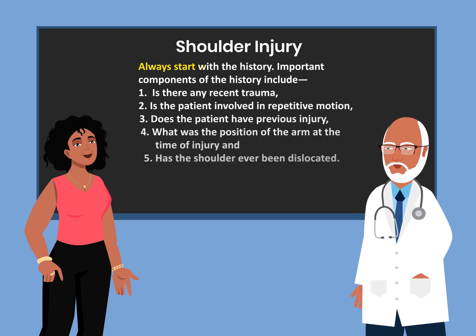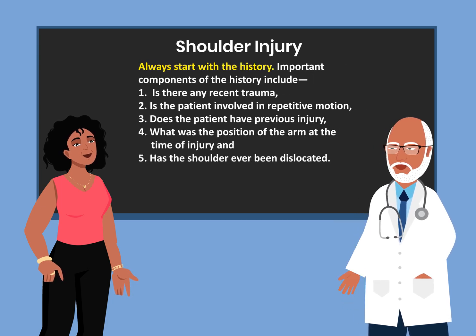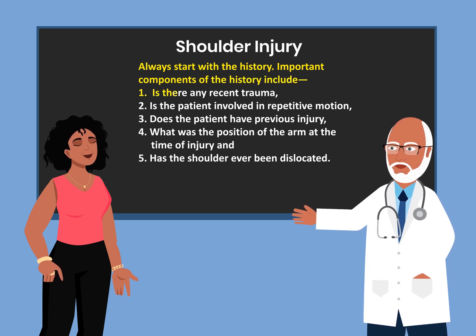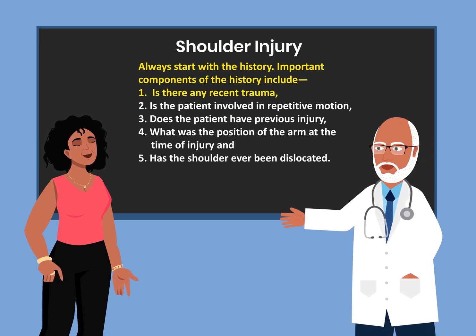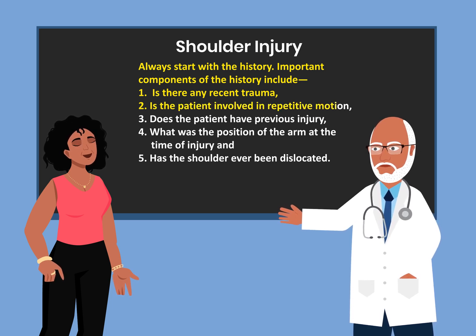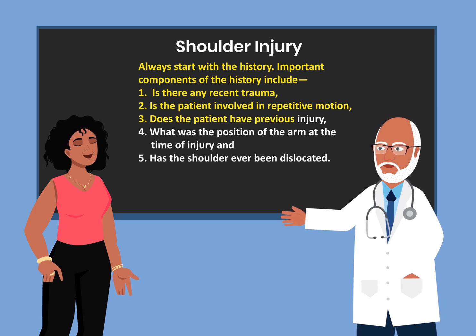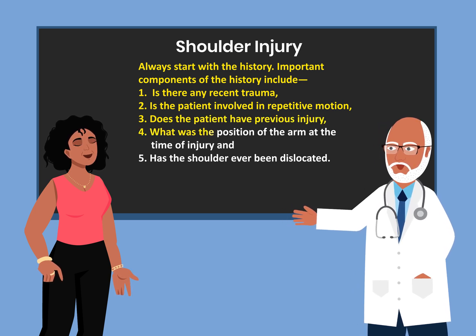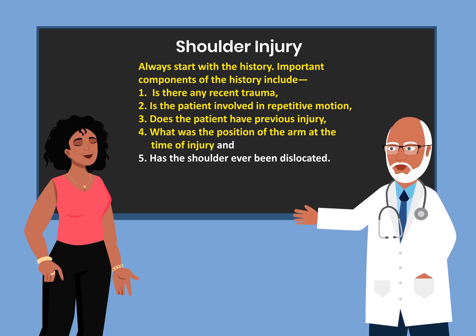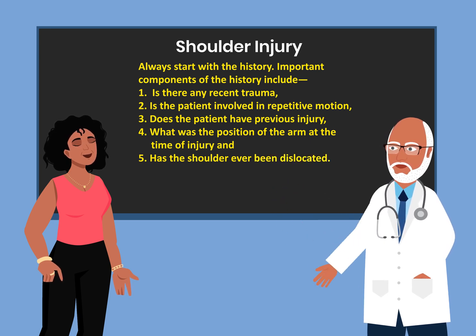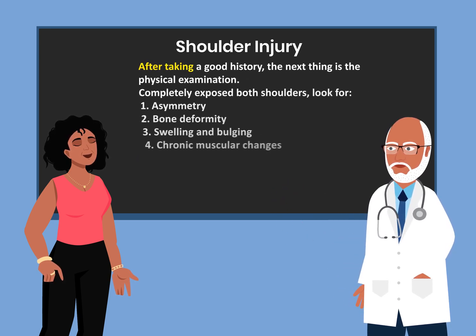Always start with the history. Important components of the history include: 1. Is there any recent trauma? 2. Is the patient involved in repetitive motion? 3. Does the patient have a previous injury? 4. What was the position of the arm at the time of injury? 5. Has the shoulder ever been dislocated?